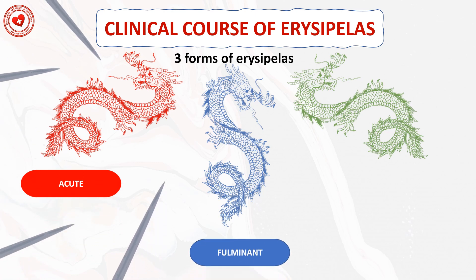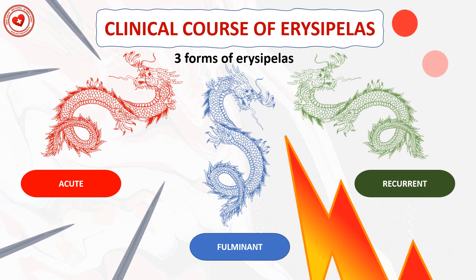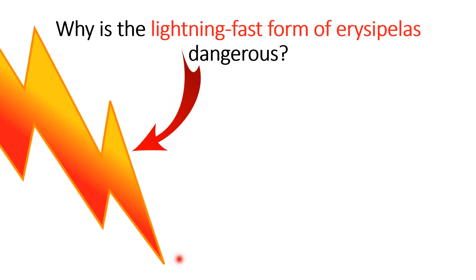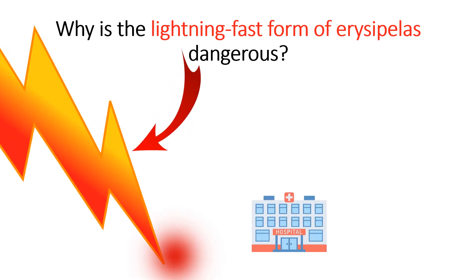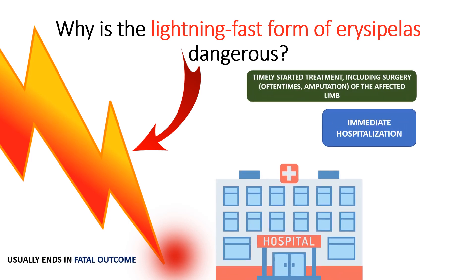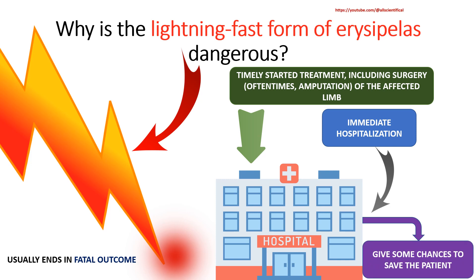The three clinical course forms are: acute, fulminant, and lightning-fast (unrecurrent). The lightning-fast form of erysipelas is very dangerous — as a rule, only immediate hospitalization and timely treatment including surgery, or amputation of the affected limb, give any chance of saving the patient.